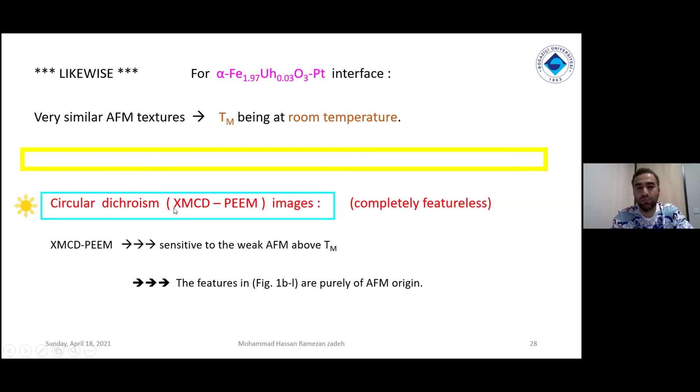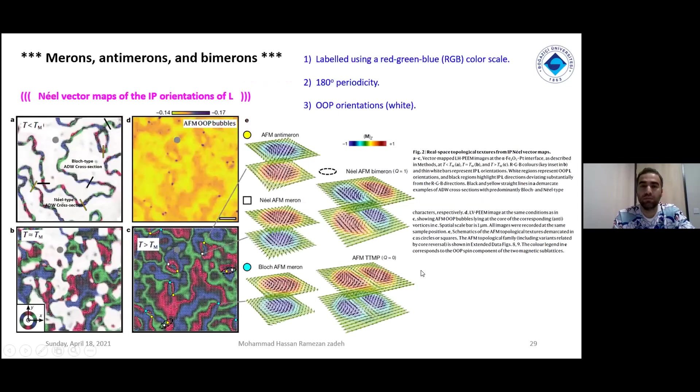They use a technique or images which are called XMCD-PEEM, which is sensitive to weak ferromagnetism above TM. They said that the features in figure 1B that we saw before were purely because of antiferromagnetic origin. Now we will go to the figures from this technique. First, they put the title: merons, anti-merons, and bimerons. They said that we have in the pictures Néel vector maps of in-plane orientations of L, labeled using a red-green or RGB color scale. 180 degrees in periodicity, and out-of-plane orientations are white.